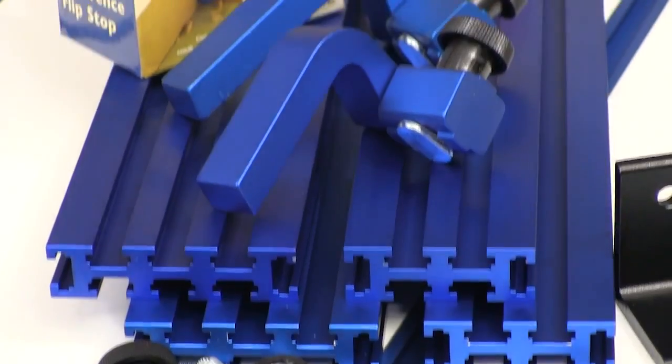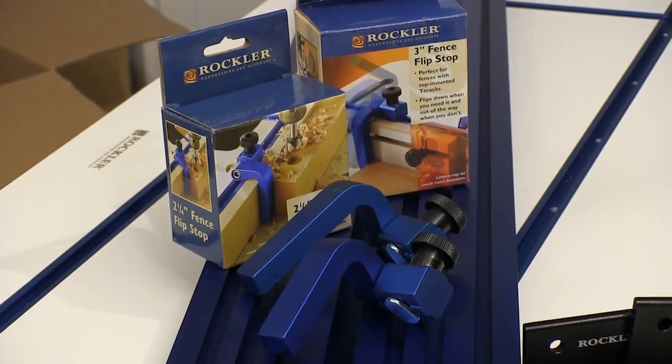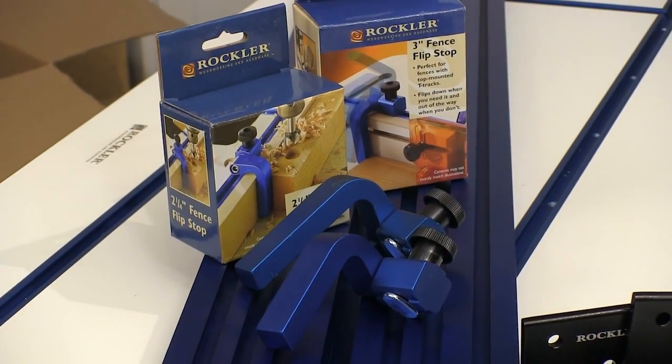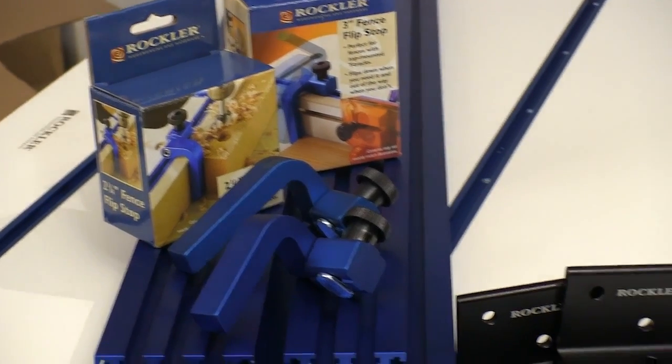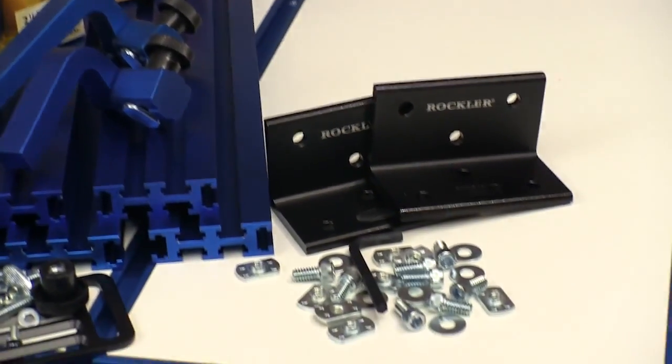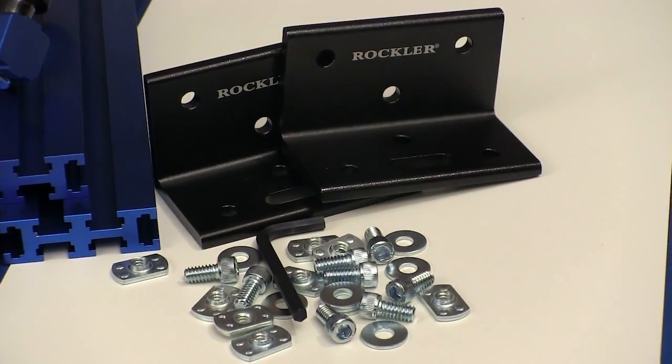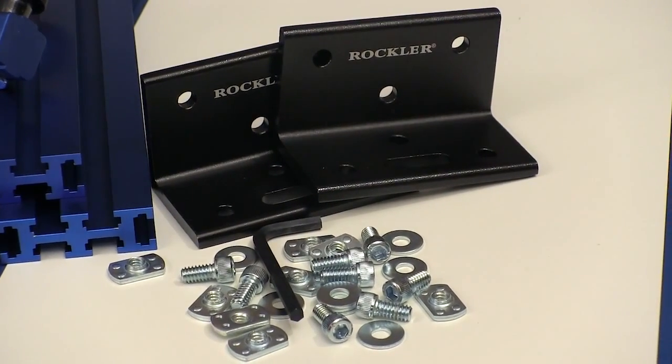Another thing we can use this table for is for assembly or making jigs or fixtures. For that, Rockler offers these multi-tracks and flip stops. Rockler also has these angle brackets that lets you put the multi-track anywhere you want in just about any configuration.